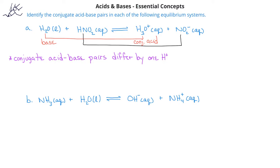Again, we ask the question: which of these two species is the acid and which is the base? The HNO2 is donating a hydrogen to the water, so therefore the nitrous acid is acting like an acid. The nitrite can act like a base because it can accept a hydrogen ion from the hydronium in the reverse reaction. So therefore, the nitrite ion would be the conjugate base of nitrous acid.